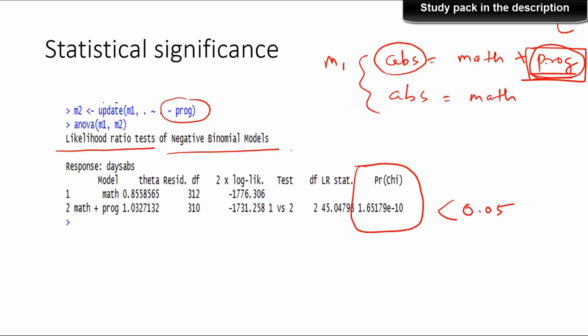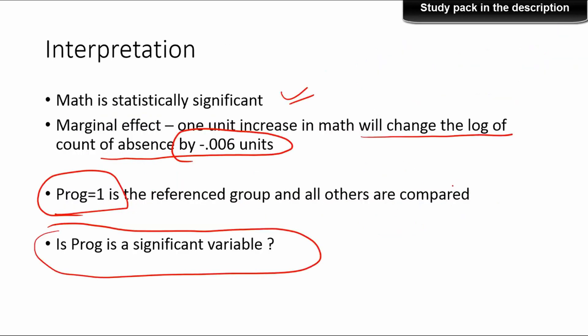That's how we confirm the significance of the program variable. Once confirmed, the interpretation can be done from the first model itself, and we can interpret the output by looking at the two coefficients for program.